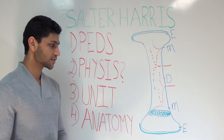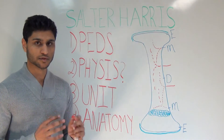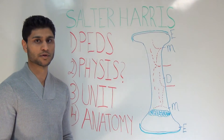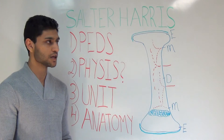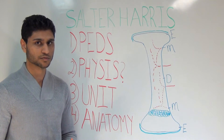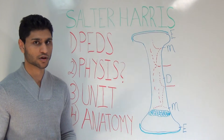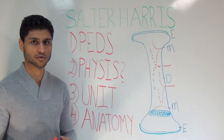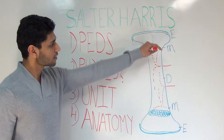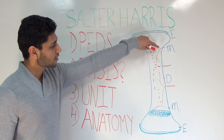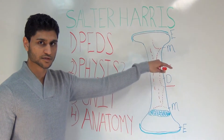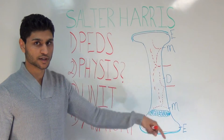Number four, just some basic anatomy of long bones. Keep in mind, we are talking about long bones, so this system does not apply to the tarsal bones, the carpal bones, or the vertebrae. In a long bone, the longest part is called the diaphysis, also known as the shaft.